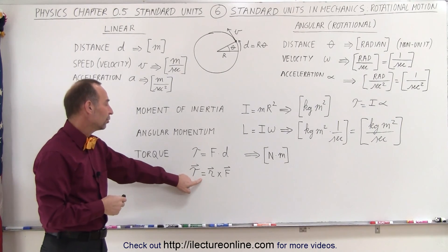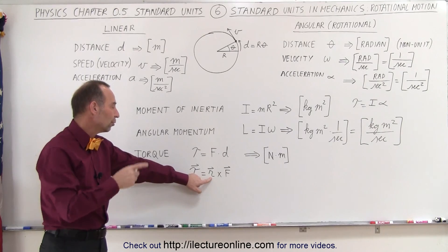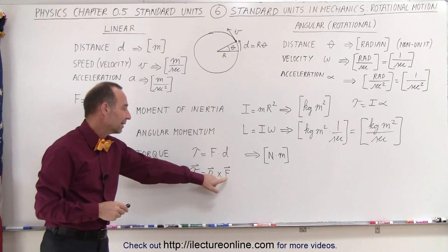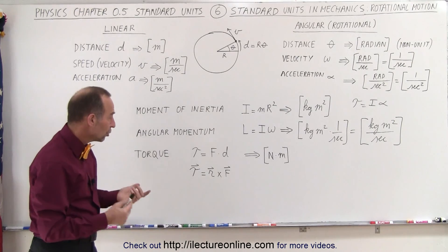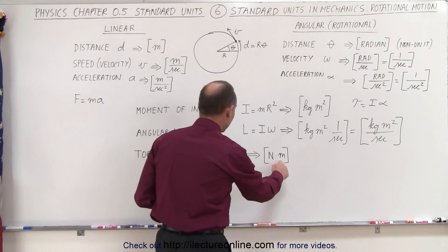So here we have torque is equal to the cross product of the point to where the force is acting times the force. So this is typically also called the moment arm. The unit for that is newtons times meters.